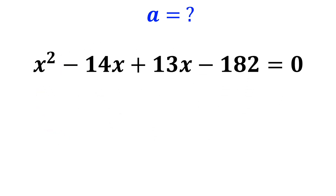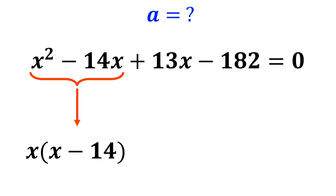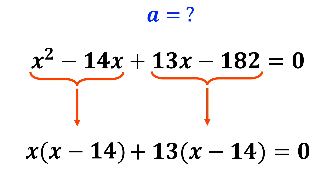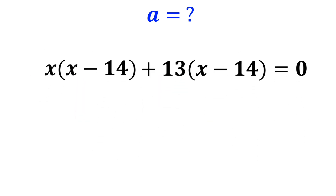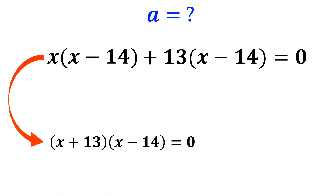We simplify this equation as follows. Instead of the expression x squared minus 14x, we write x times x minus 14. And instead of the expression 13x minus 182, we write 13 times x minus 14, which is equal to 0. Now we factor out x minus 14, and this equation simplifies to x plus 13 times x minus 14 is equal to 0.